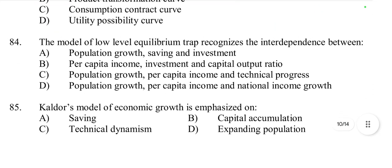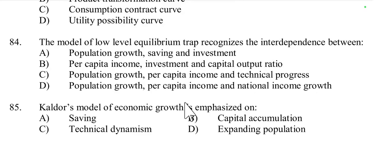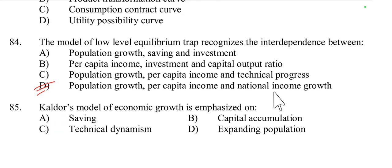Question number 84: The model of low-level equilibrium trap, given by Nelson, recognizes the interdependence between population growth, per capita income, and national income growth. The low-level equilibrium trap is an economic theory describing a situation where low income levels prevent people from saving and investing enough, leading to a low rate of economic growth. When population rises, per capita income falls and national income growth decreases.